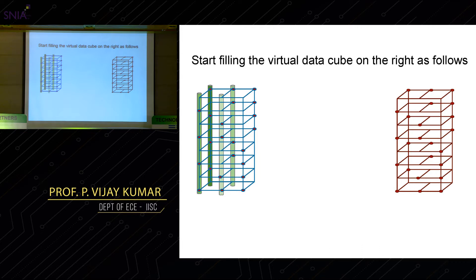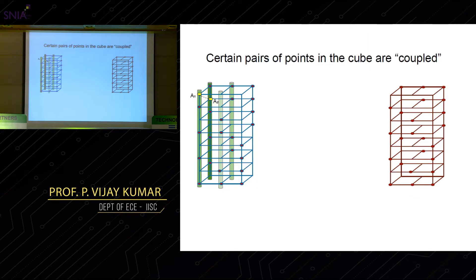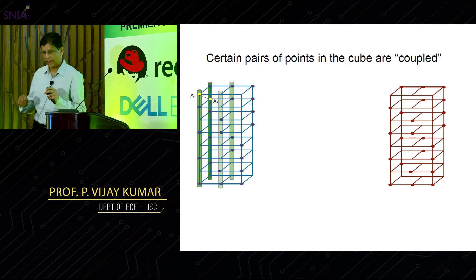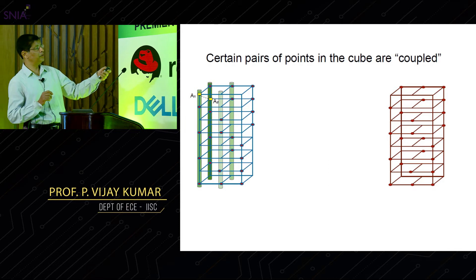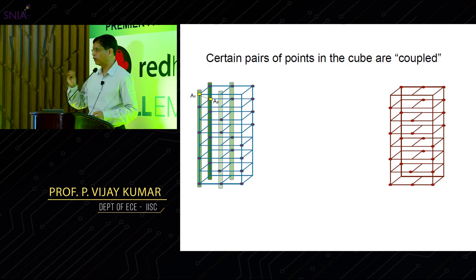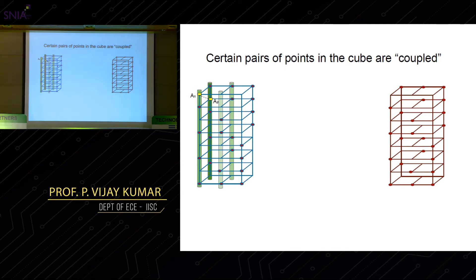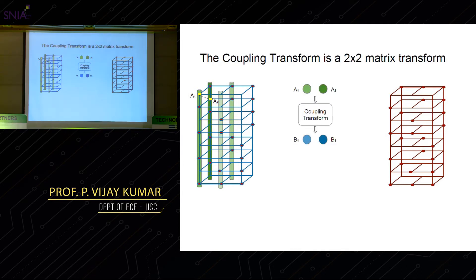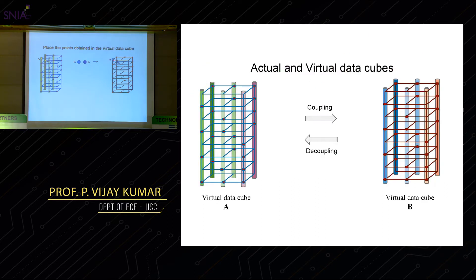To get from the data cube A to the virtual data cube B, we use coupling. The code is called 'coupled-layer' because horizontal layers are coupled in a simple way — there is a pairing of elements. The red dots correspond to fixed points that are not coupled; all others are paired. For example, a paired point here and its partner are taken together, a simple coupling transform is applied to go from two inputs to two outputs, and the result is stored in B. You repeat this for all data nodes.